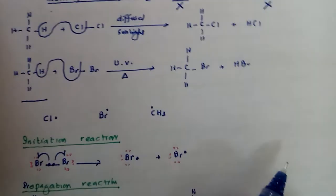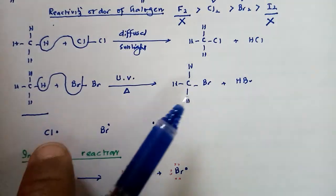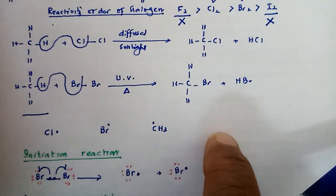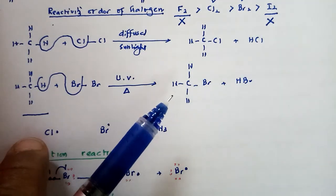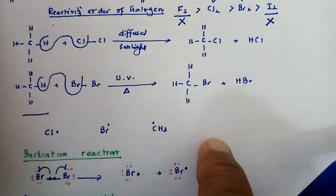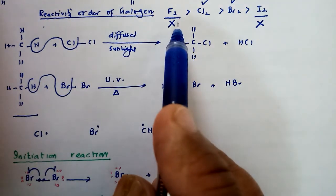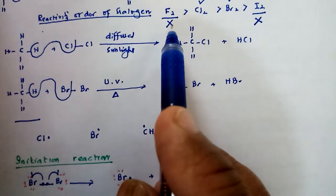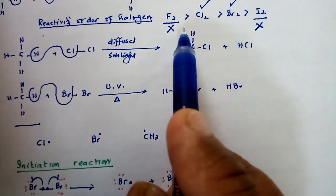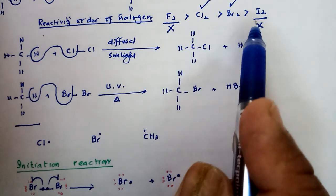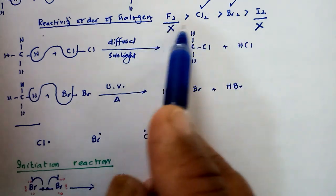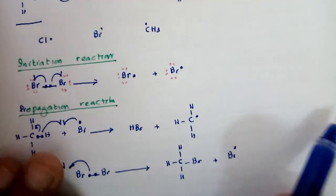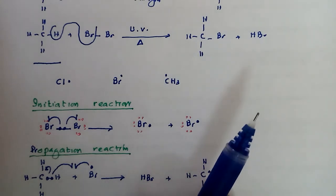For MCQs: the reaction between methane and chlorine takes place by free radical mechanism; the reaction between methane and bromine also takes place by free radical mechanism. Regarding the correct order of reactivity of halogens with alkane: least reactive is iodine, most reactive is fluorine. Questions about the correct order of reactivity may also be asked.